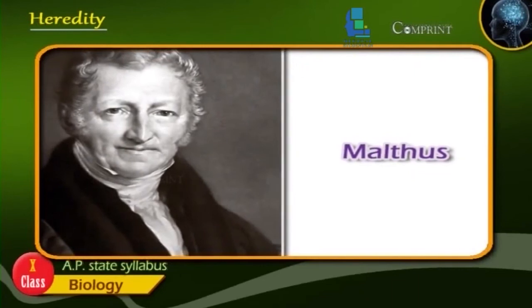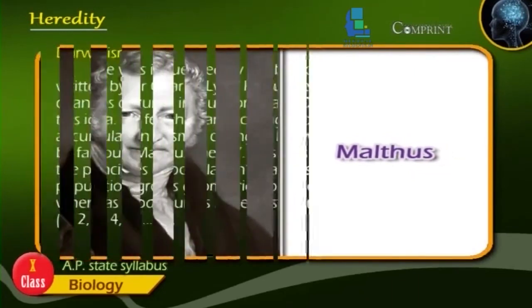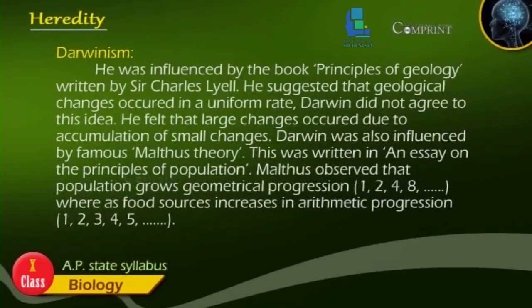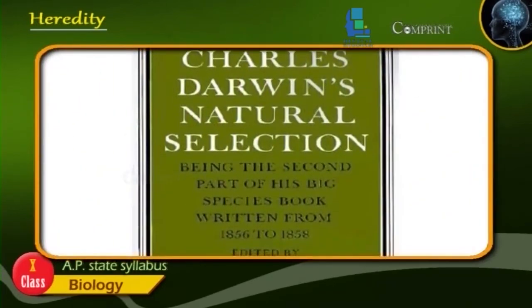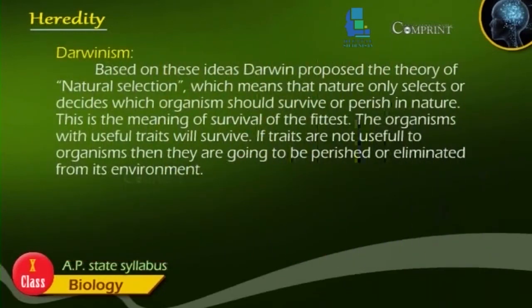Darwin was also influenced by Malthus's famous theory, written in his essay on the Principles of Population. Malthus observed that population grows in geometrical progression (1, 2, 4, 8...) whereas food sources increase in arithmetic progression (1, 2, 3, 4, 5...). Based on these ideas, Darwin proposed the theory of natural selection — meaning that nature selects which organism should survive or perish. This is the meaning of 'survival of the fittest.' Organisms with useful traits will survive; if traits are not useful, those organisms will be eliminated from their environment.